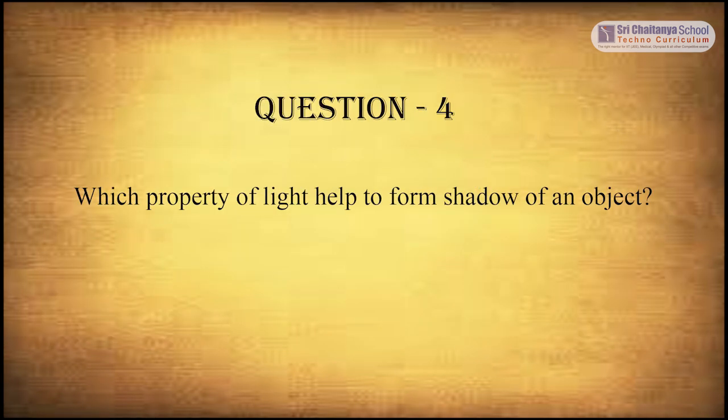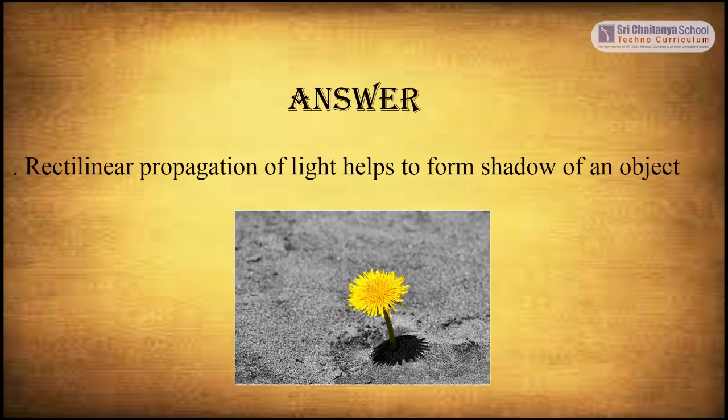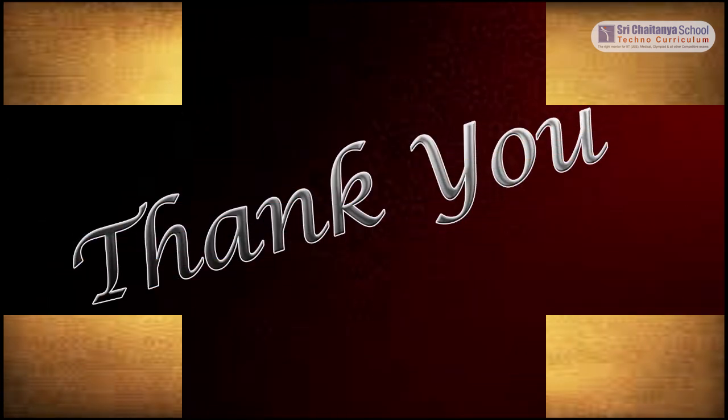The final question is: which property of light helps to form the shadow of an object? The answer is: rectilinear propagation of light helps to form the shadow of an object. Thank you.